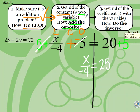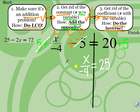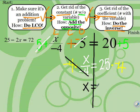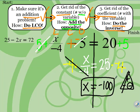We go back to our flowchart — done with step 2, moving to step 3. Step 3: get rid of the coefficient, the one with the variable. We do the inverse. What is happening to this variable? It's being divided by negative 4. The inverse of division is multiplication, so we multiply each side by negative 4. These cancel out, leaving x by itself. 25 times negative 4: we know 25 times 4 is 100, and using the sign triangle, a positive times a negative is negative. So x equals negative 100.